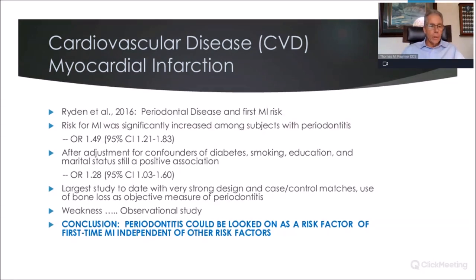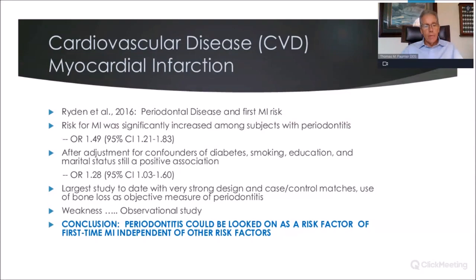Ryden's study looked at periodontal disease and first MI risk. He found risk for MI was significantly increased among subjects with periodontitis — nearly 50% greater risk, odds ratio 1.49, with a confidence interval from 21% to 83%. After adjustment for confounders — diabetes, smoking, education, and marital status — there was still a positive association, but much less: 28% more likely to have a first MI if you had periodontal disease, with a confidence interval from 3% to 60%. That's still a good take-home message, and this was a very well-done, large study.